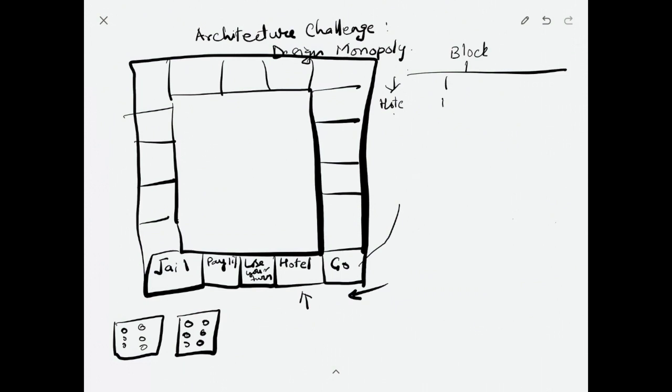Each block in the Monopoly game can be hotel, jail, you may have to pay some tax, or you may lose a turn. If you go to hotel and the hotel is pre-owned then you have to pay the rent. If it is not pre-owned you can buy it.